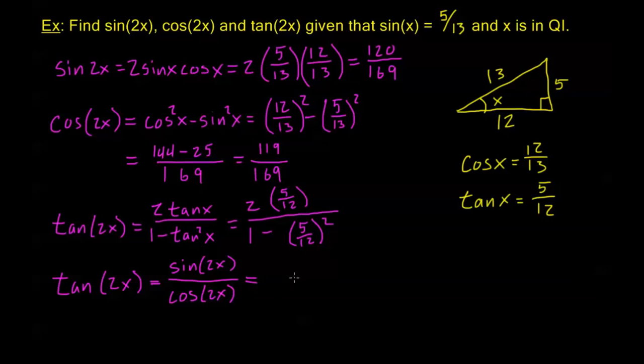So here's sine of 2x over cosine of 2x. That's 120 over 169 divided by 119 over 169. My 169s cancel, or more explicitly, I'm dividing fractions. This is 120 over 169 times the reciprocal of my denominator, which is 169 over 119. The 169s cancel, and we simply get 120 over 119.